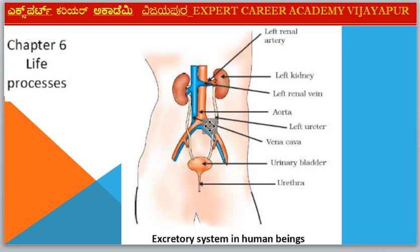Next diagram — Chapter 6: Life Processes. Diagram 4: Excretory System in Human Being. Parts include Left Kidney, Left Renal Vein/Artery, Ureter, Urinary Bladder.